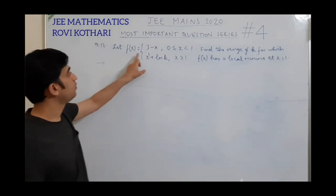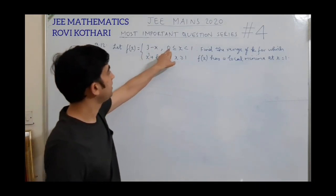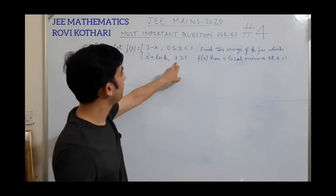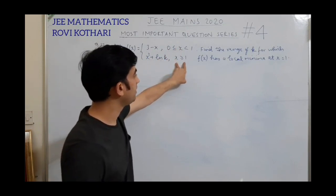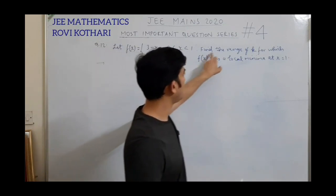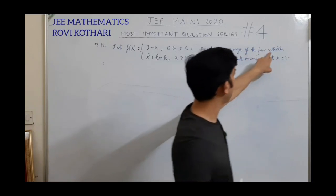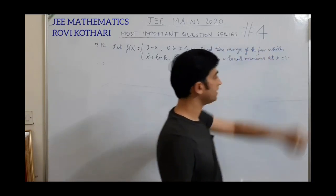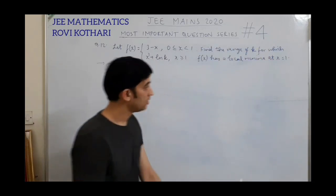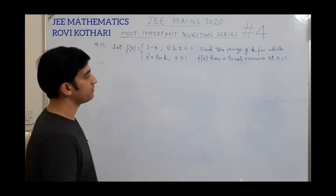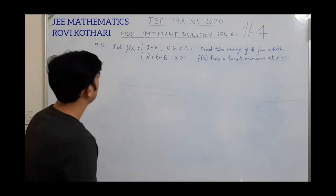Let f(x) equal to 3 minus x for x from 0 to 1, and x squared plus ln(k) when x is greater than or equal to 1. It's a piecewise defined function. Find the range of k for which f(x) has a local minima at x equal to 1. It's a very important question from maxima and minima.